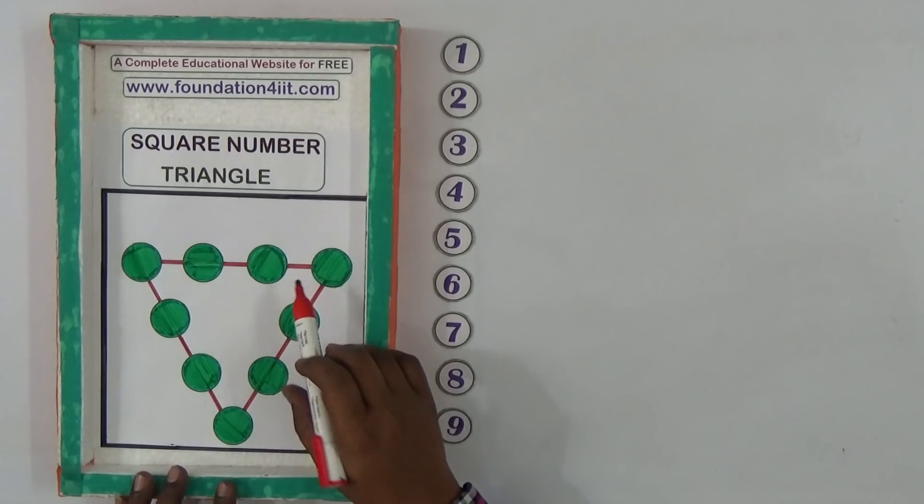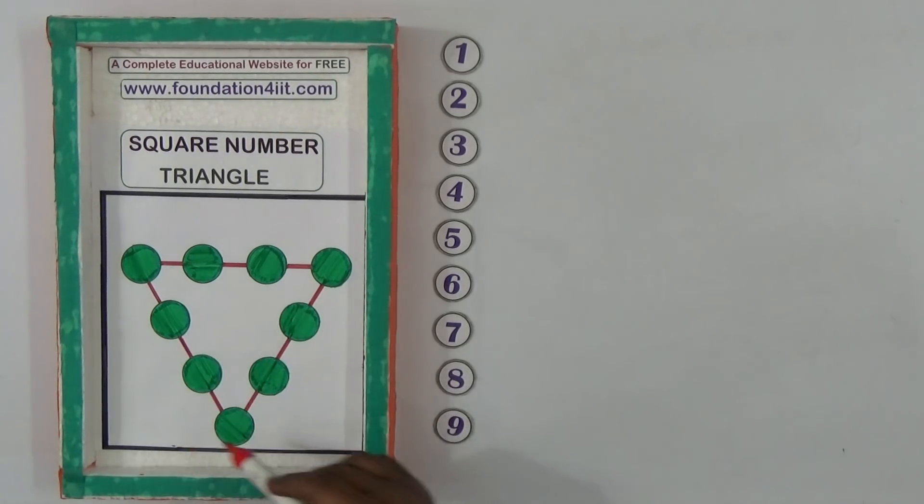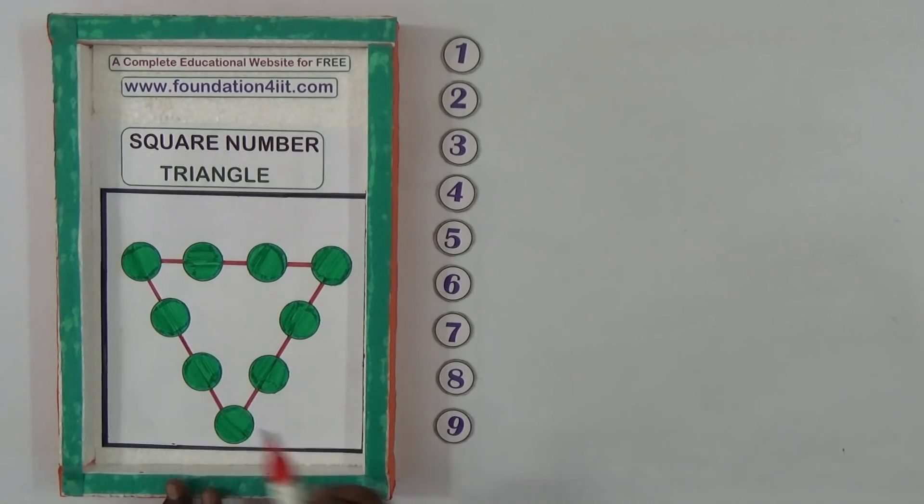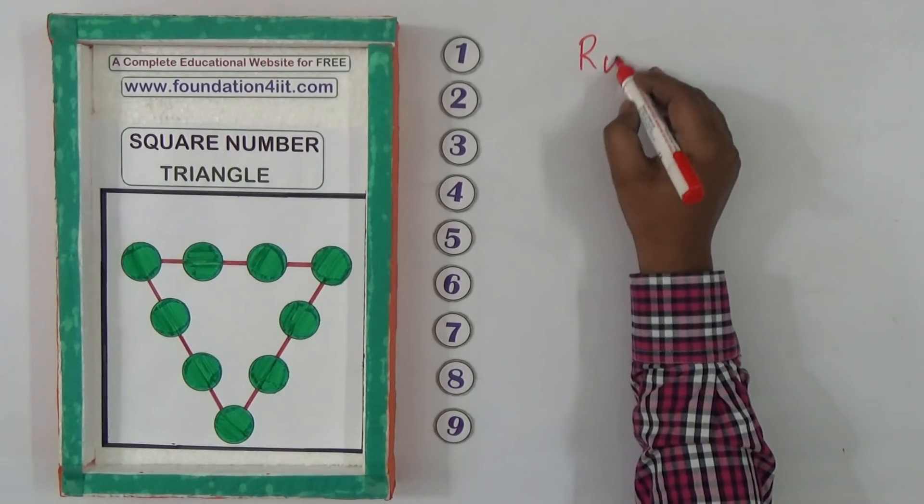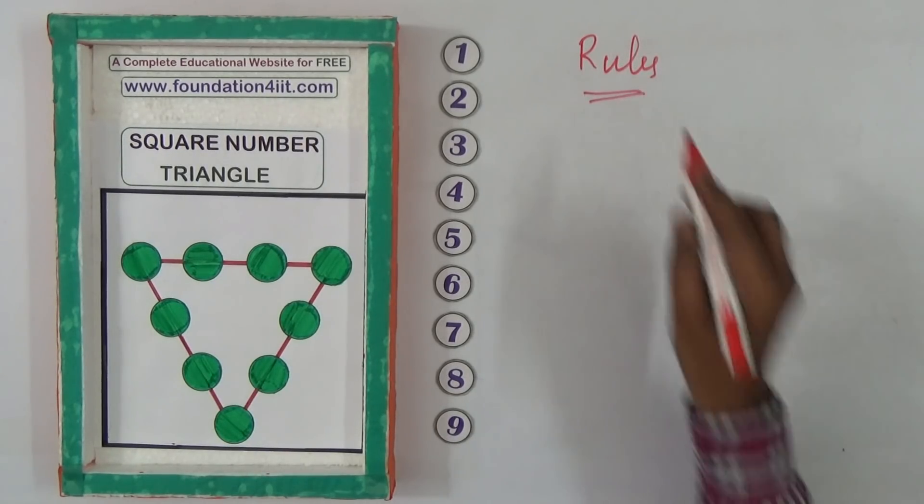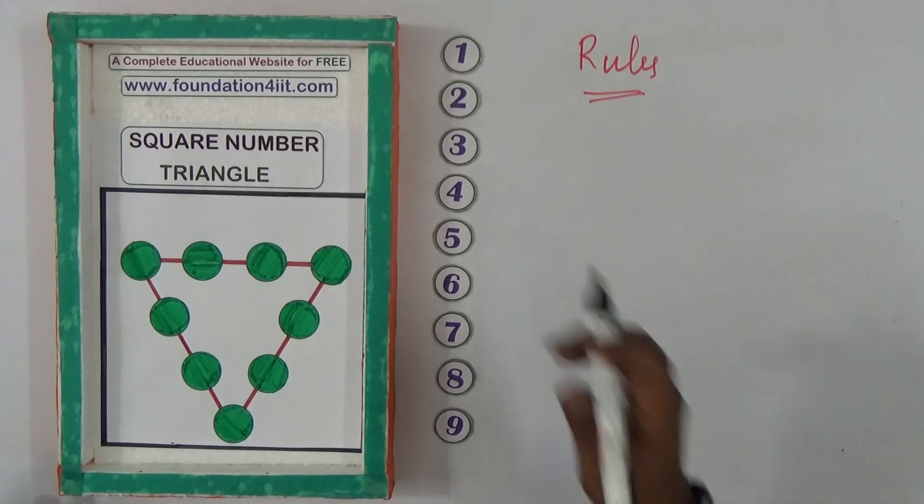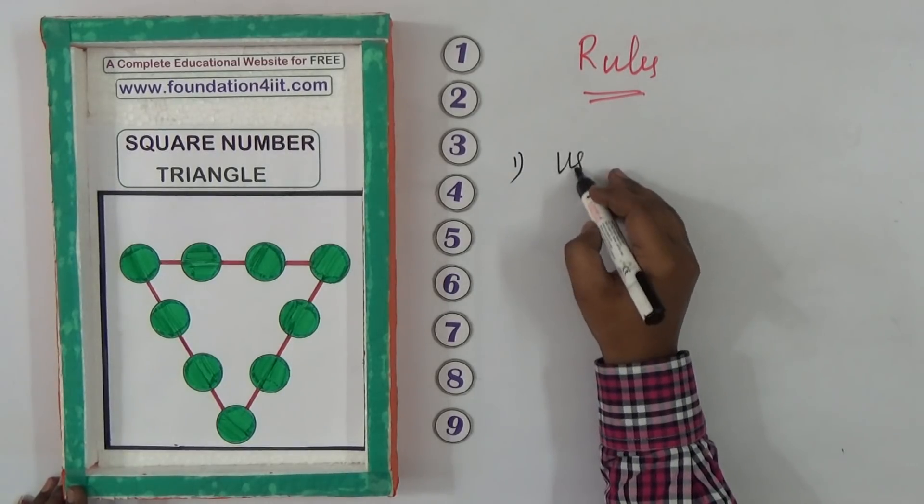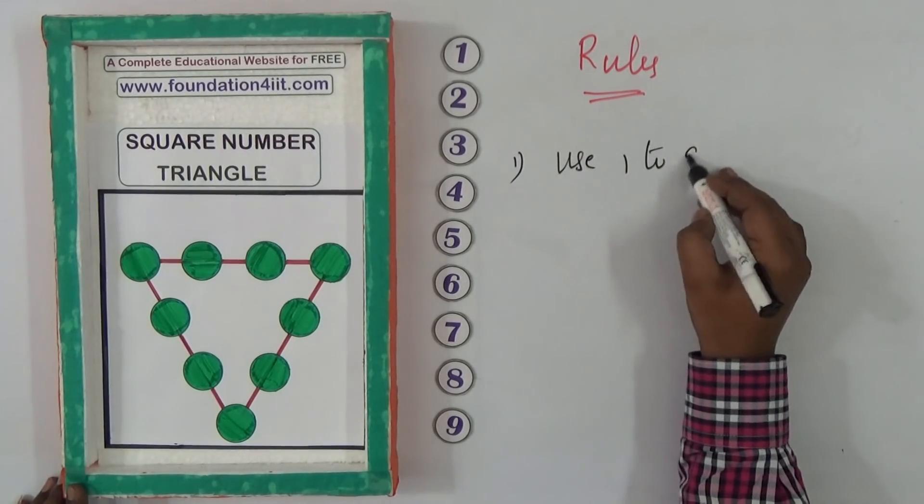In this number game, this puzzle is about square number triangle. Here there are total nine circles. These nine numbers I need to keep here. Follow the rules. The first rule is we need to keep these nine digits in this nine circles, so use one to nine digits.